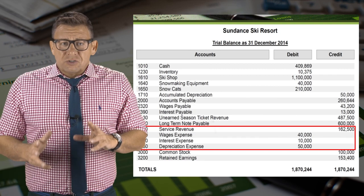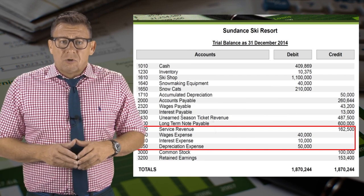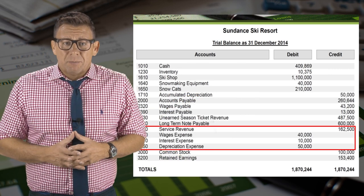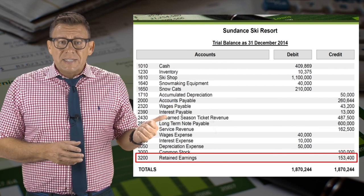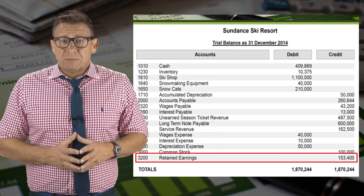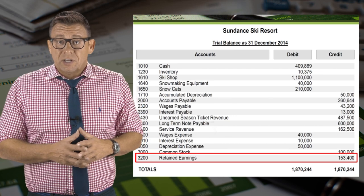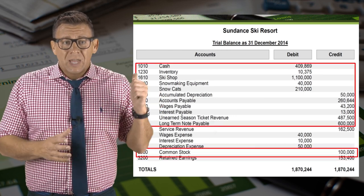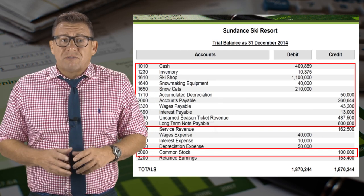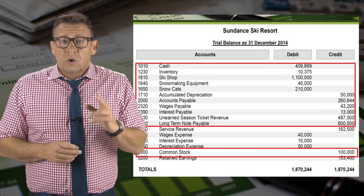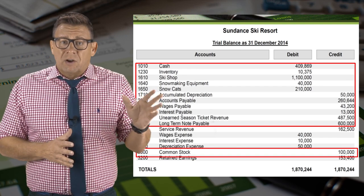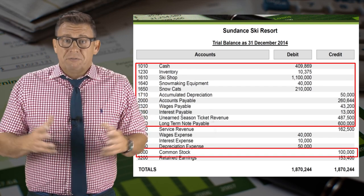We will use the adjusted trial balance to prepare the financial statements. Revenues and expenses will go to the income statement and produce net income. Retained earnings, dividends if this company had any, and net income from the income statement will go to the statement of retained earnings and produce ending retained earnings. Assets, liabilities, common stock, and ending retained earnings from the statement of retained earnings will go on the balance sheet. We will learn more about financial statements in Accounting Cycle Step 7, Preparing Financial Statements.